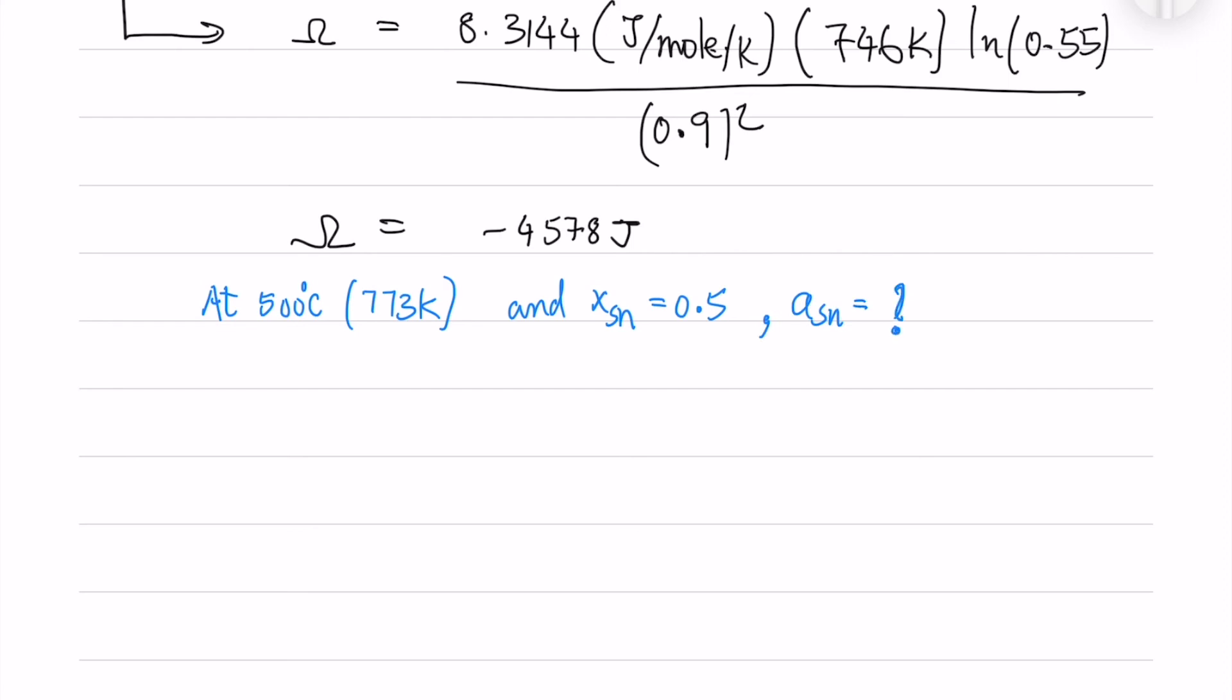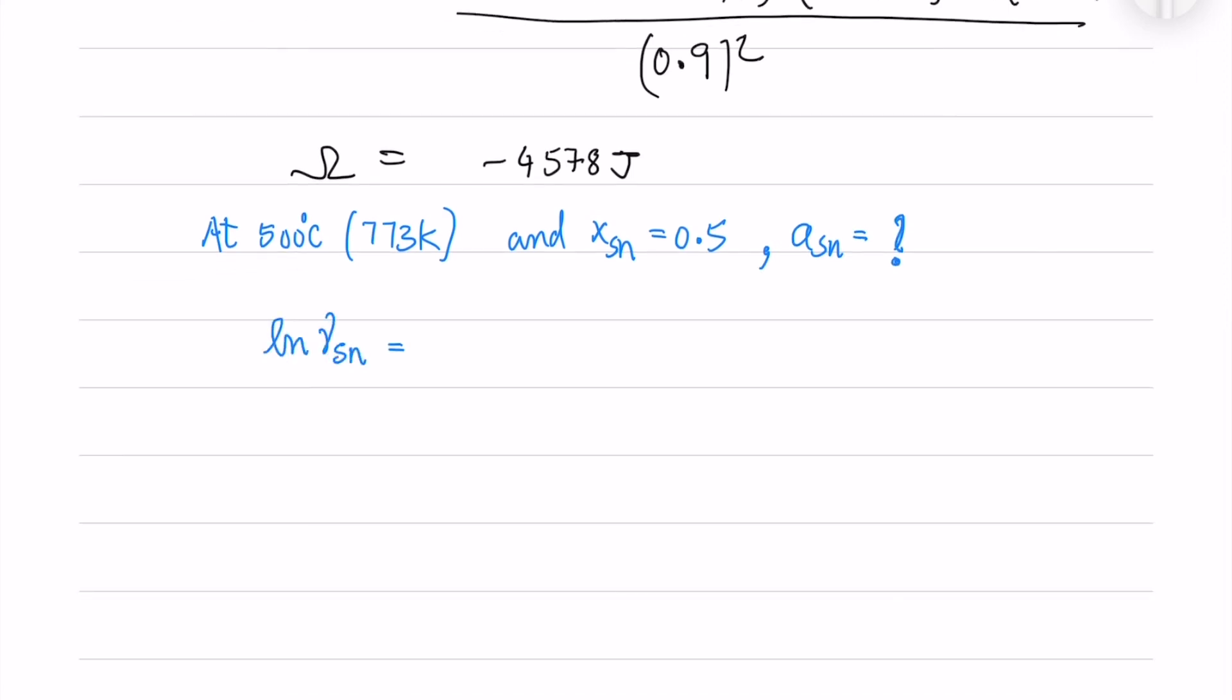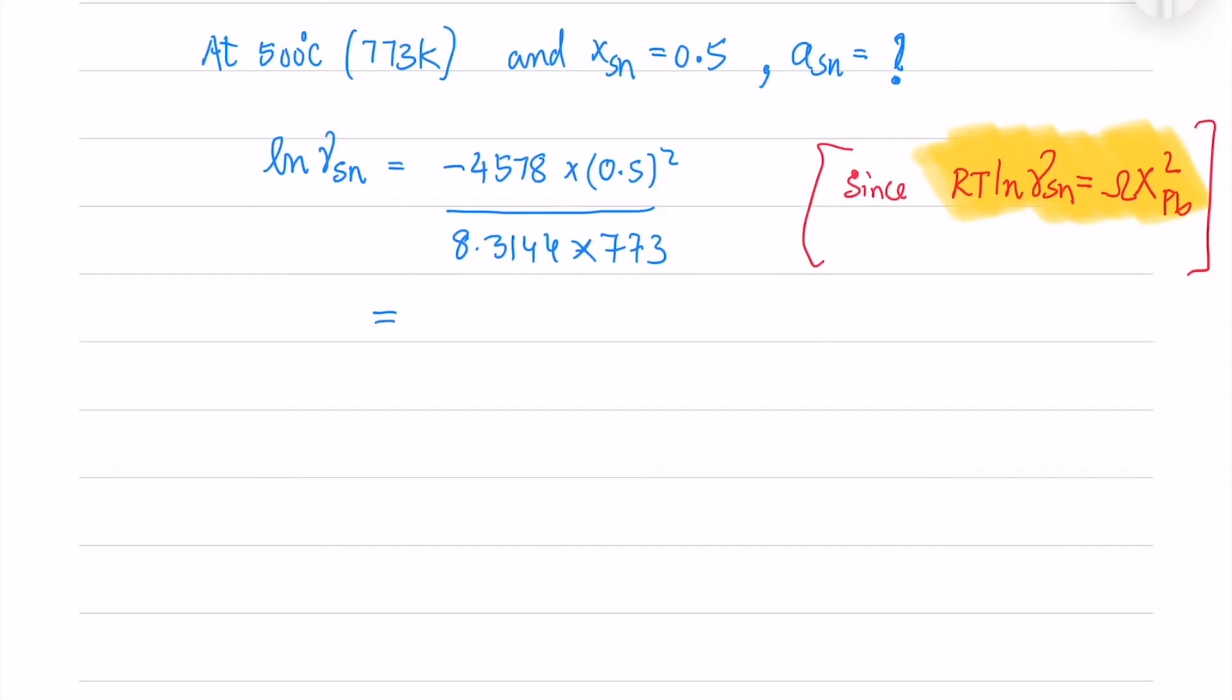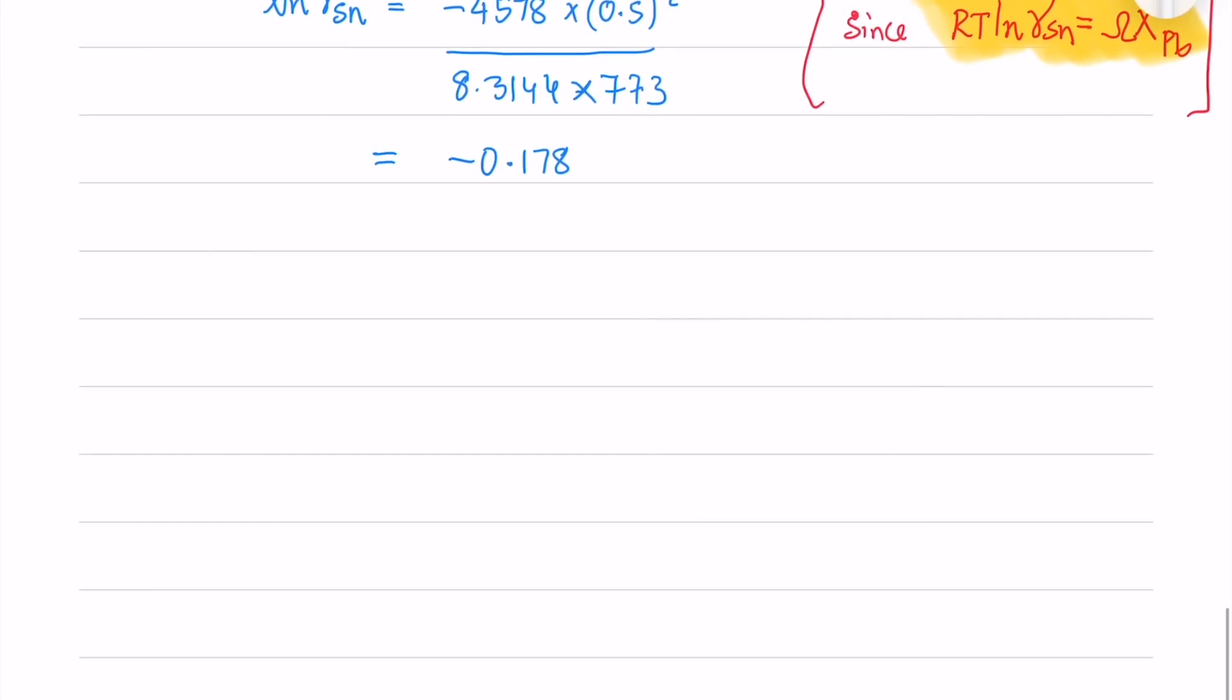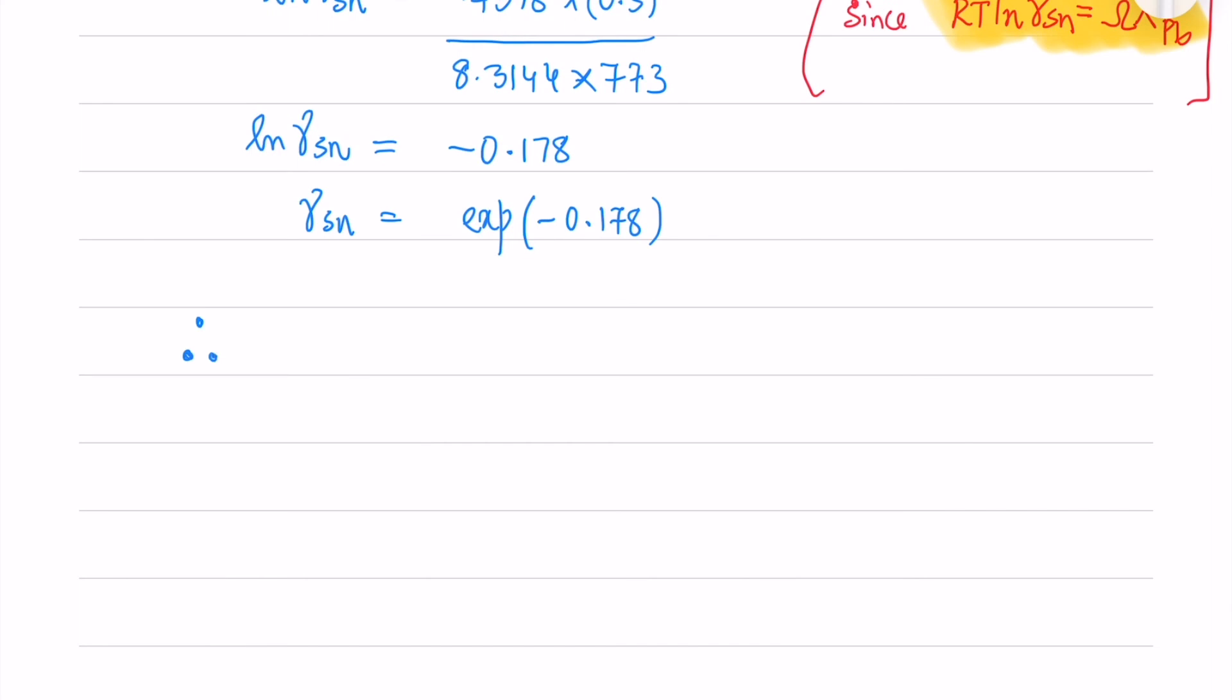Now the question also asked: at 400 degrees Celsius and the mole fraction of Sn is 0.5, what is the activity of Sn? I have derived that equation above. Since RT ln gamma_Sn equals omega x_Pb square, I will use that which I have written above. I will obtain gamma as exponential minus 0.178. So the activity is nothing but mole fraction times gamma. That is 0.418.